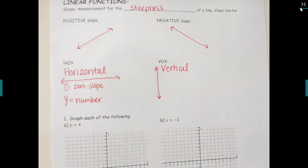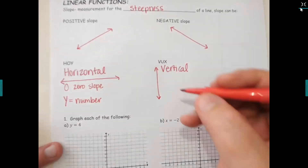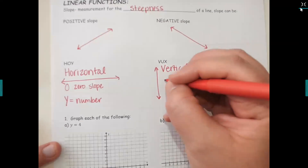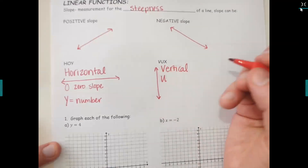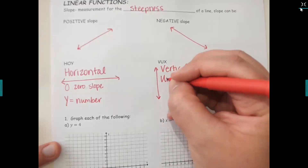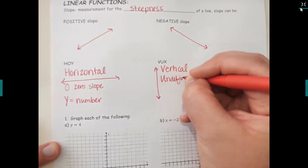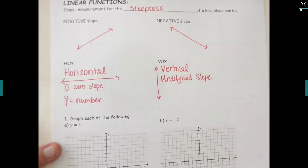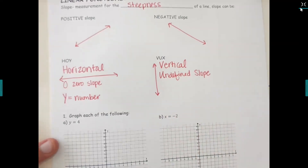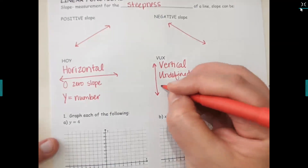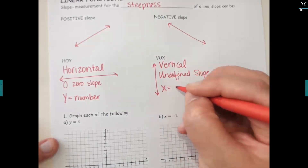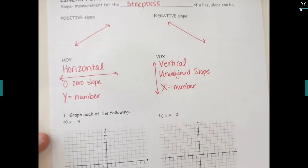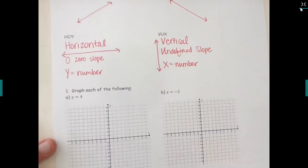A vertical line is going to have a slope that is undefined — that is correct. It has an undefined slope, and then instead of being a y-equals equation it's going to be x equals and then a number.